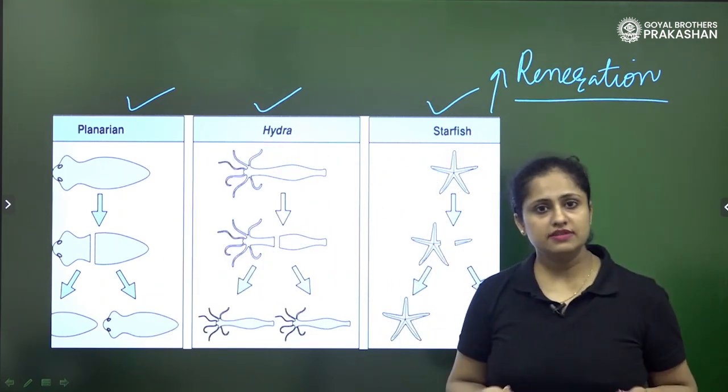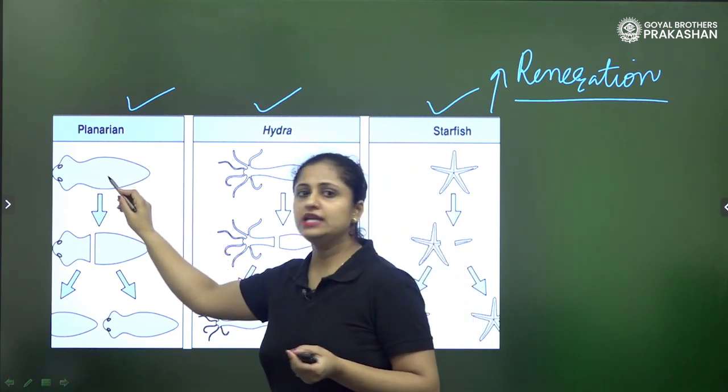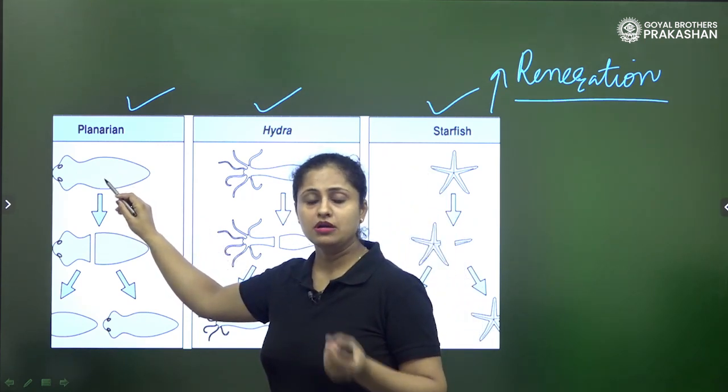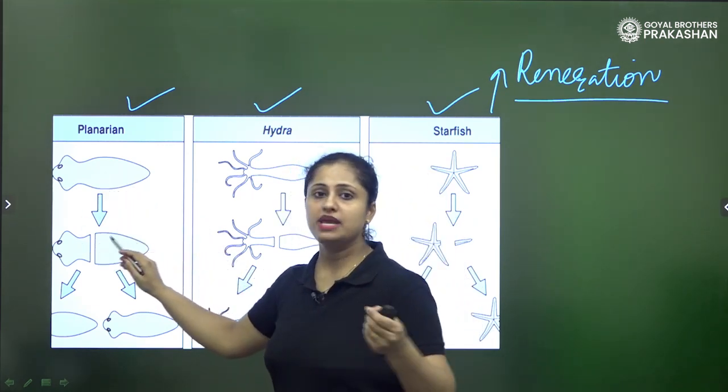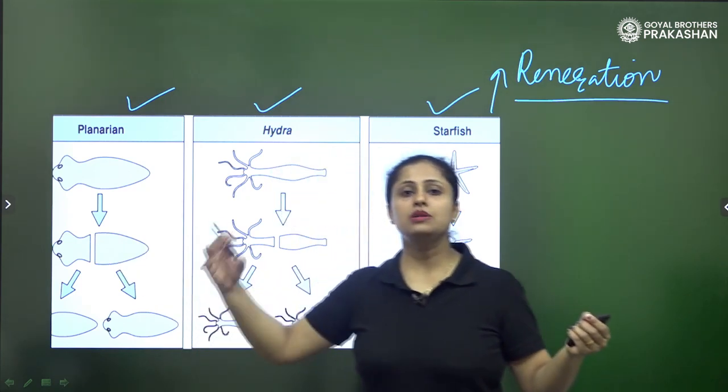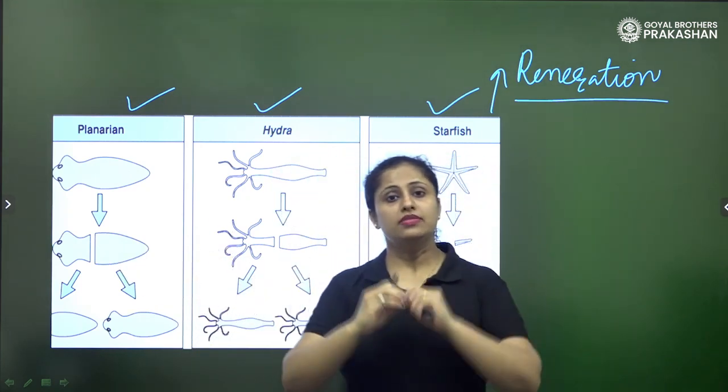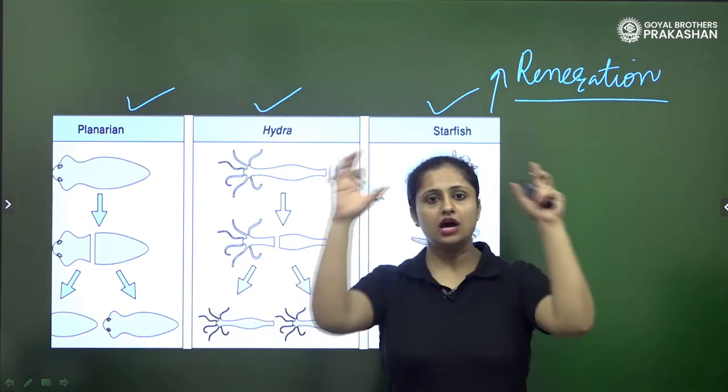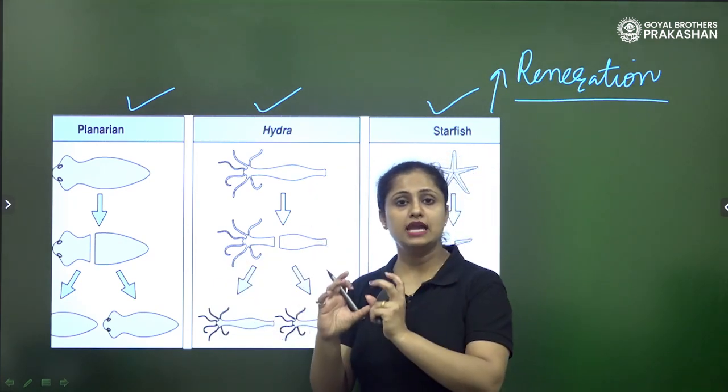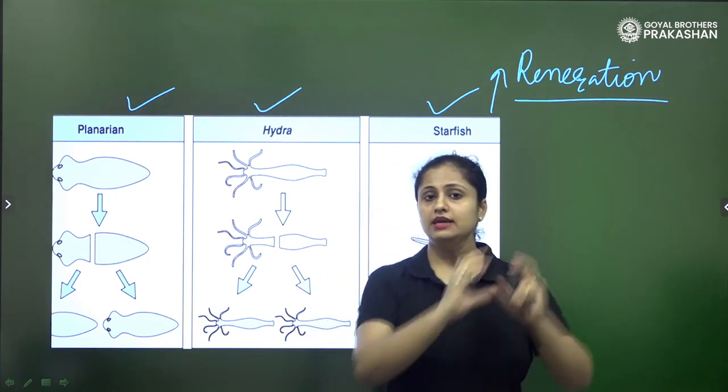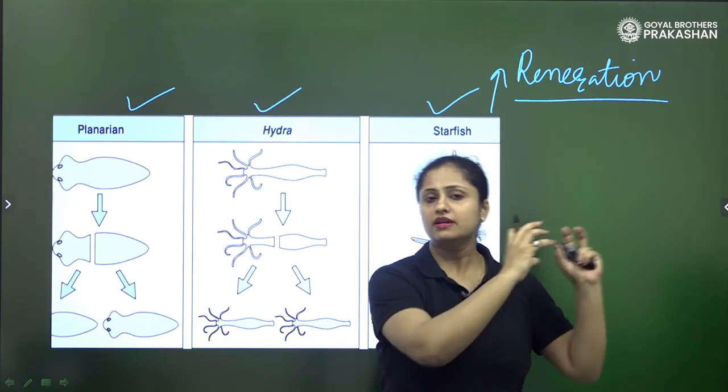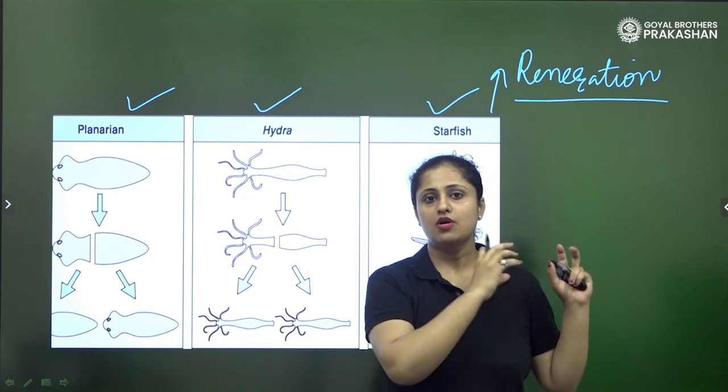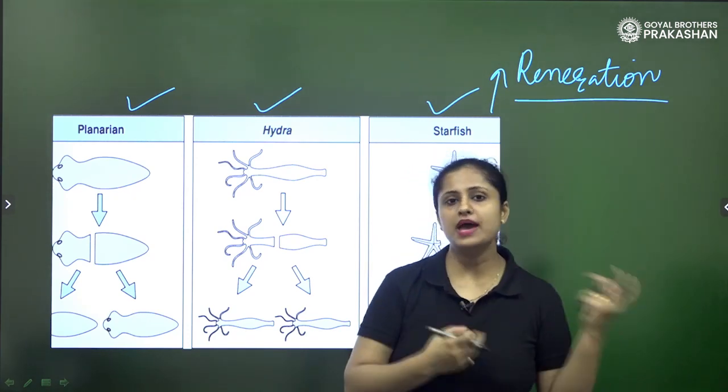So what happens in regeneration is that a complete organism if cut into two or many pieces, those all individual pieces form the individual number of organisms. This is how the entire individual can be formed by the cut pieces of an individual which is parent.